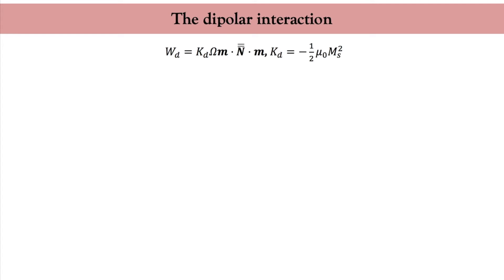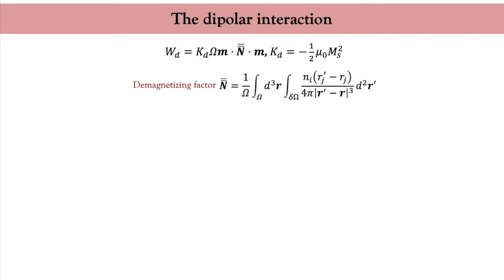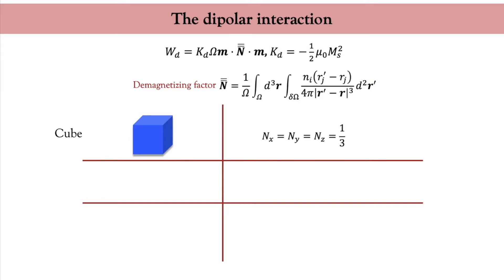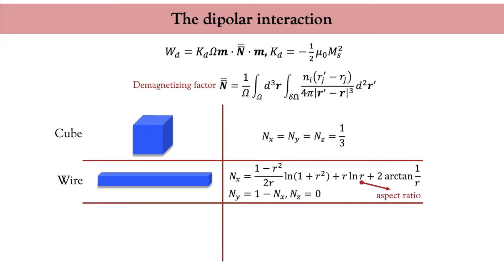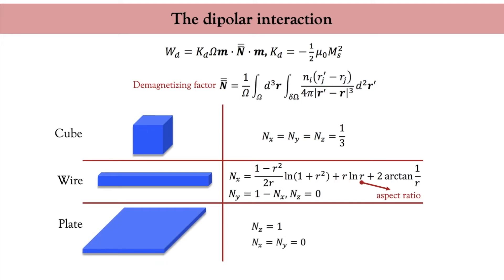The demagnetizing tensor has trace equal to 1 by definition. For a cubic magnet, the three directions x, y, and z are equivalent, yielding a diagonal tensor with equal components. For an infinite magnetic wire with rectangular cross-section of aspect ratio r, the demagnetizing coefficient Nz is zero and Nx, Ny can be calculated with specific formulas. For a two-dimensional plate extended in x and y, only Nz is non-zero, meaning the demagnetizing field pushes the magnetization to lie in the plane.